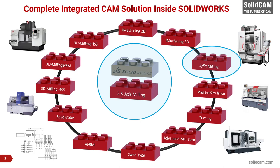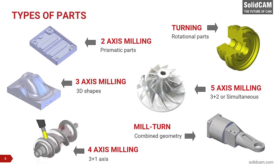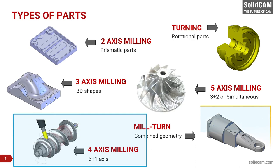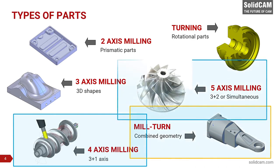Incorporating 4- and 5-axis milling allows for more complex and precise machining compared to traditional 3-axis milling alone. 4- and 5-axis milling machines utilize additional axes that allow for rotation, enabling the machine to access difficult-to-reach areas of the workpiece with greater accuracy and efficiency. This technology is particularly useful for creating complex shapes such as curved surfaces, undercuts, and angled features that would otherwise be difficult or impossible to produce with 3-axis milling.